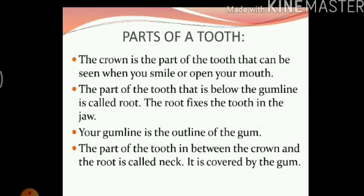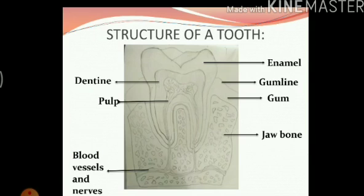The neck is covered by the gum. There is not much difference here — just a new name added to this part of the tooth. Now let us look at the structure of the tooth and learn the parts one by one. I have labeled all the parts of the tooth and will explain them one by one. Right on top we have the enamel.